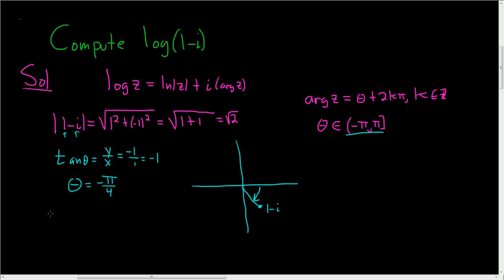And so now we can go ahead and write the answer down. So the log of 1 minus i, that's the natural log of the modulus. We said the modulus was the square root of 2, plus i times the argument of z.